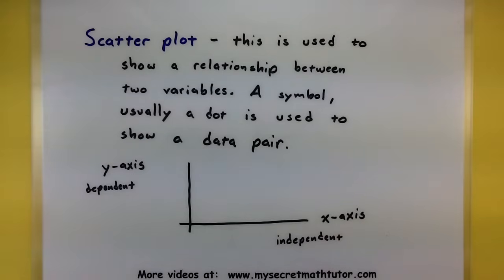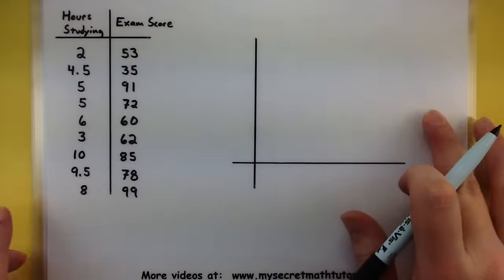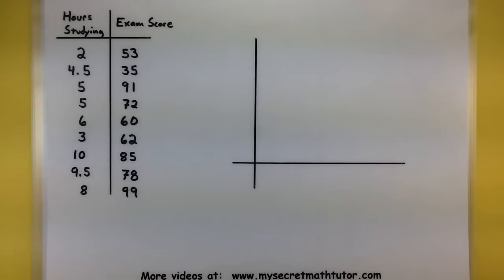Alright, let's give it a try. So we want to create a scatter plot for the following data. And this chart or table here just represents the hours of studying and a particular exam score that some students had.